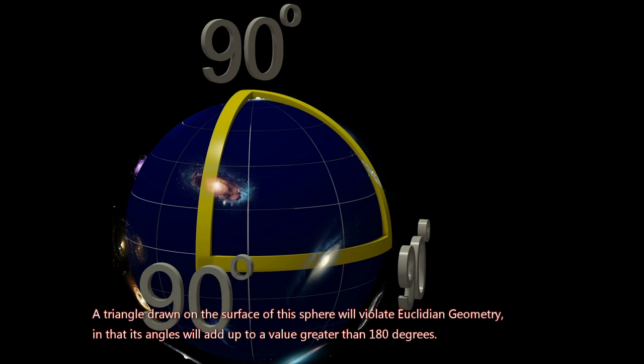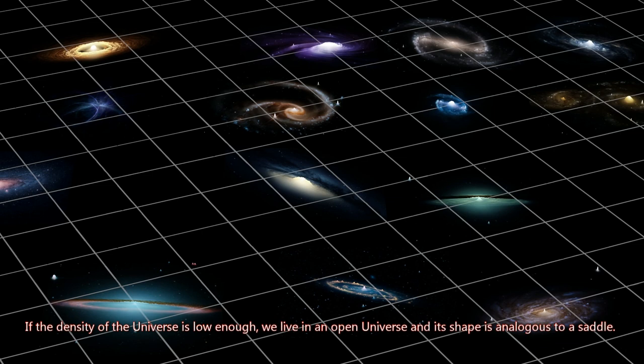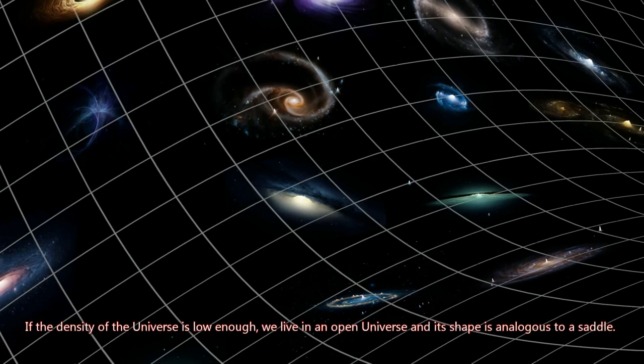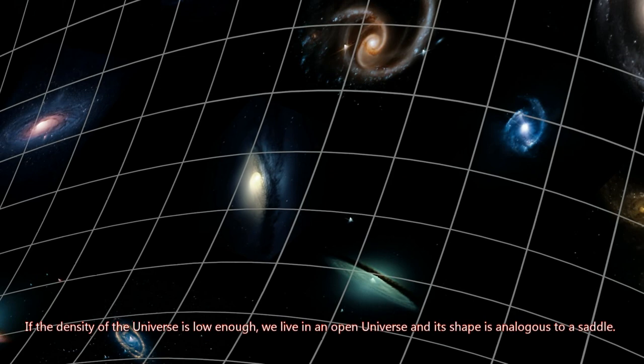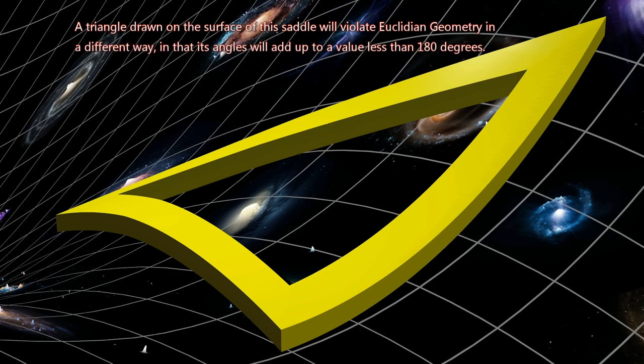If the density of the universe is low enough, we live in an open universe, and its shape is analogous to a saddle. A triangle drawn on the surface of this sphere will violate Euclidean geometry in a different way, in that its angles will add up to a value less than 180 degrees.